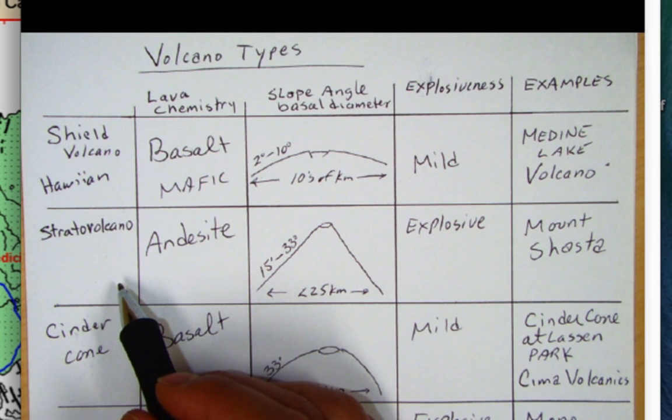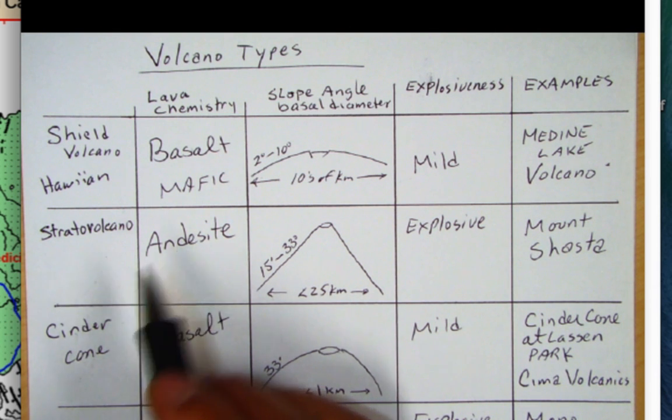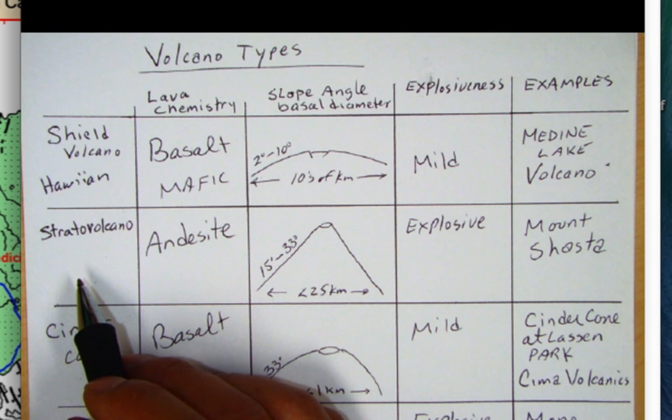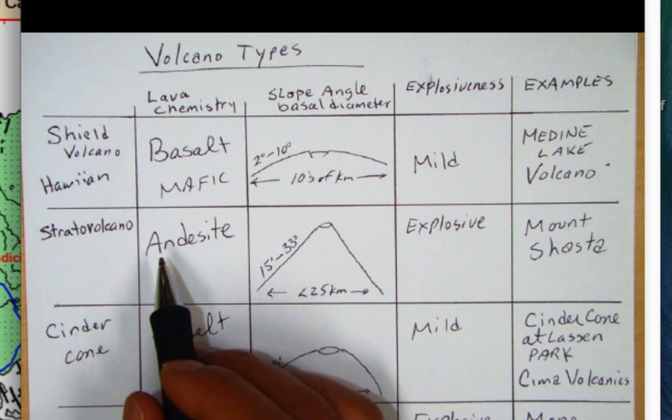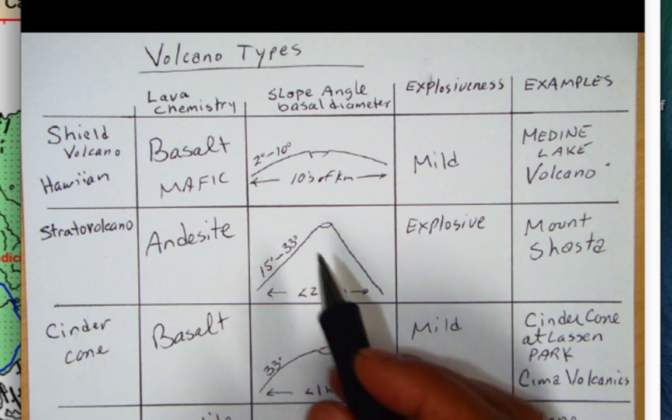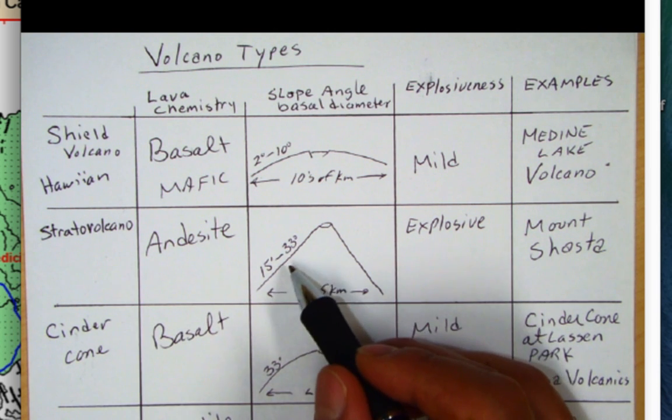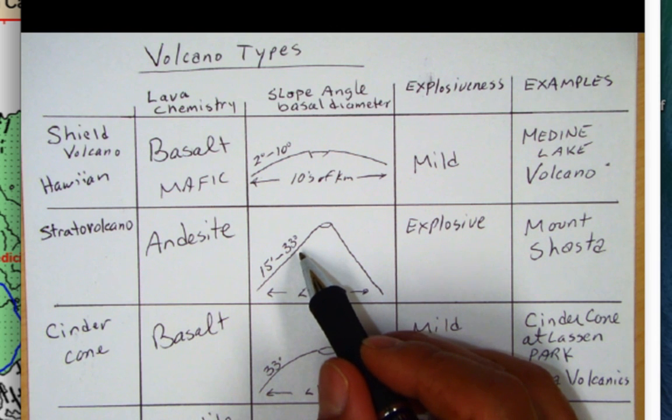The next category are these stratovolcanoes. Stratovolcanoes are your classic subduction zone volcanoes. When people think of volcanoes they often think of a stratovolcano like a Mount Fuji in Japan. They're going to be primarily andesite lava, intermediate composition, and you can see they're going to be more peaky, a 15 to about a 33 degree slope angle.